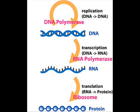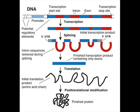DNA unwinds and polymerase reads the DNA and converts it to RNA. This is done by way of a start sequence that the polymerase reads, and a reading frame where it starts producing RNA, and a stop sequence where it ends the reading.